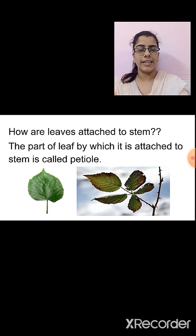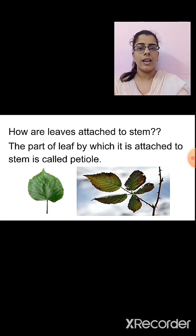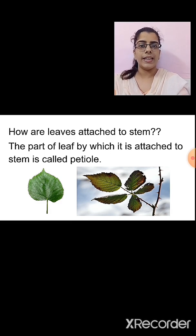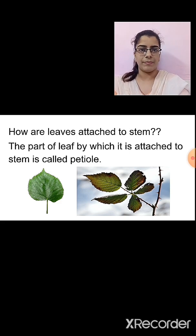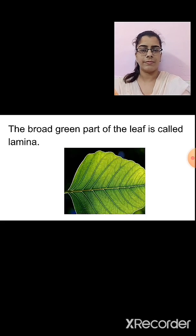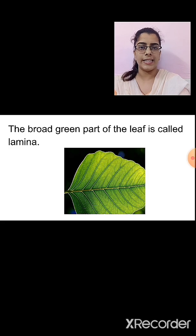The leaf is attached to the stem. The part of the leaf that is attached to the stem is called the petiole. So the petiole is that part of the leaf which connects to the stem. The broad green part of the leaf that we see is called the lamina.